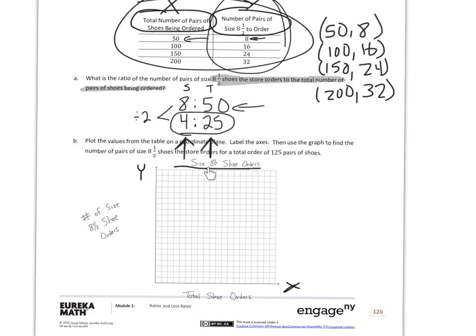So now you can see I have put in my title. I just decided to name it size 8 1/2 shoe orders. That's what this graph is going to tell you about. Now this side, my y that I'm getting from this part of my table is my number of size 8 1/2 orders. And the x-axis, which I'm getting from here, is the total number of shoe orders.